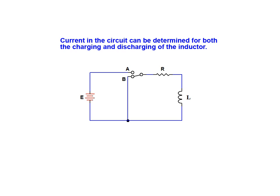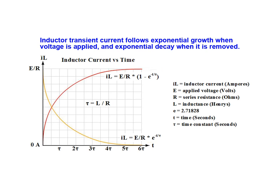Current in the series RL circuit can be determined for both the charging and discharging of the inductor. Inductor transient current follows an exponential growth when voltage is applied and an exponential decay when it is removed.